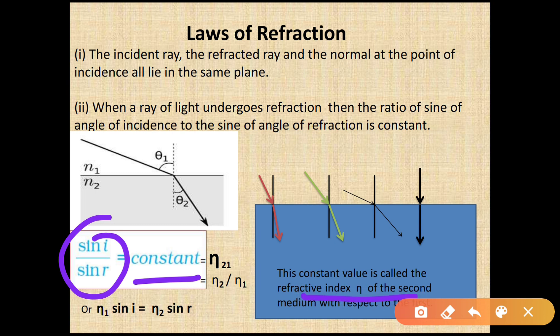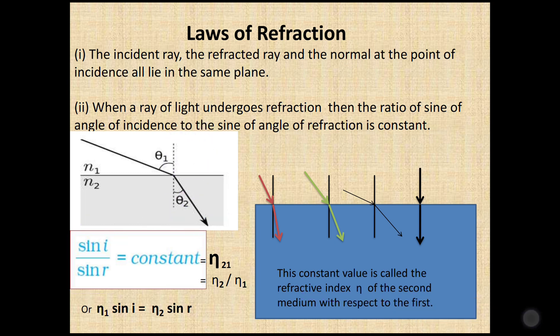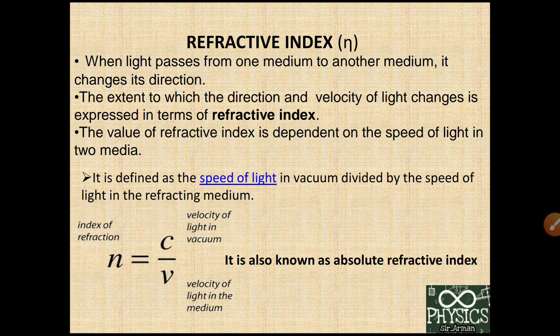This constant is the refractive index of the second medium with respect to the first medium. Let us try to understand the refractive index, and then we will again try to understand Snell's law in terms of refractive index. When light passes from one medium to another medium, it changes its direction as well as its velocity.